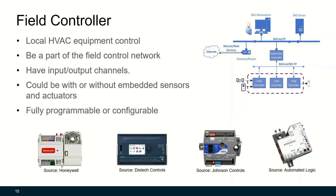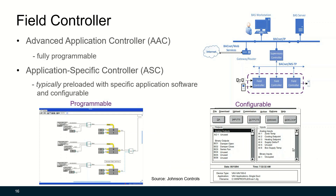Field controllers are typically used to control local HVAC equipment and are part of the field control network. They have input and output channels, and could be with or without embedded sensors and actuators. They are either fully programmable or configurable. In a programmable controller, you can program any sequence you want. In a configurable controller, there is pre-configured and pre-loaded software — you can only select available points and configure certain inputs, outputs, and parameters, but cannot freely program any sequence.